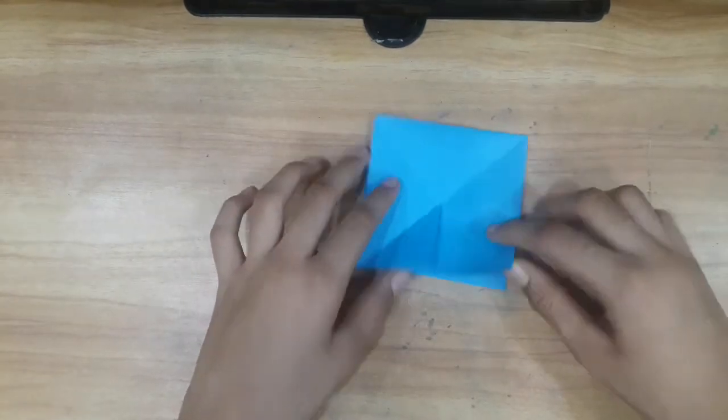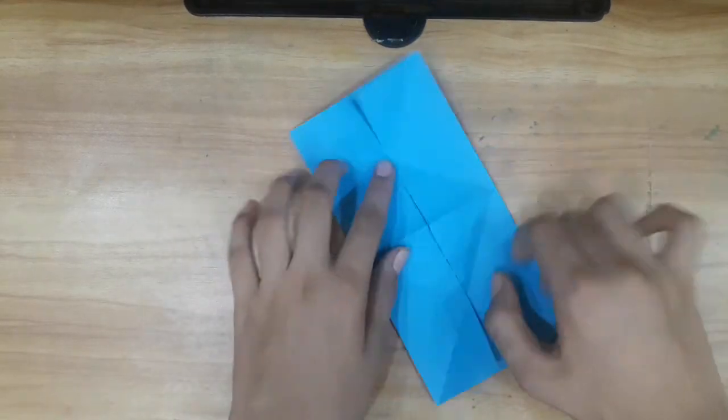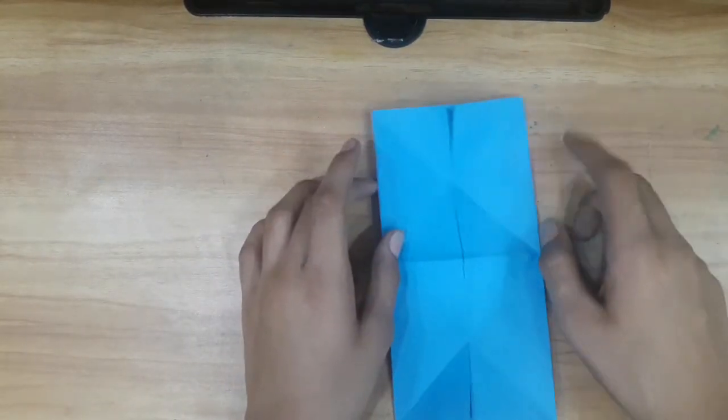Okay, we have done. Now we have to open it. You can see that one cross is on this side and one on this side. Now let's see this process. This is somewhat difficult.